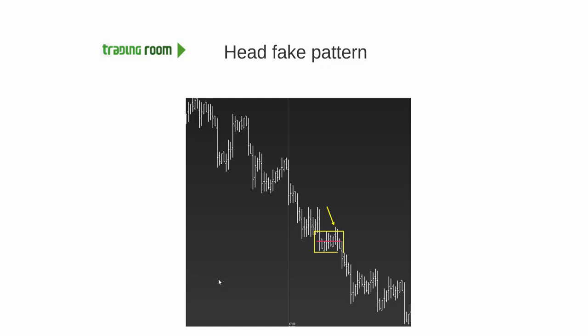Why? What's the equation? Well, when you move up through consolidation like that, you create shorts getting stopped out. When you stop out shorts, there are less buyers in the market. Remember, if you're short, you're trying to buy it. If you get stopped out, you pull that buy order.